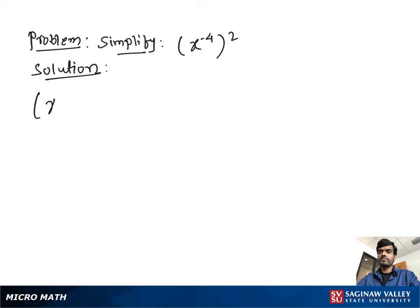Simplify x to the negative 4, all to the square power. First, we multiply the exponents by the power to get x to the negative 8. Now, to make the power of x positive, we move x to the bottom, giving us our final answer: 1 over x to the positive 8.